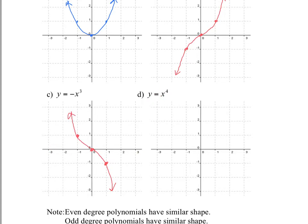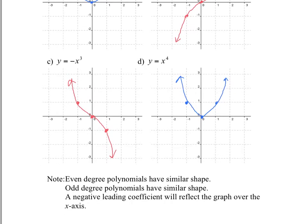x to the fourth actually looks very similar to x squared — it might be a little bit flatter. Instead of going straight up, it's a little flatter and goes up quickly. At zero you have zero, at one you have one, at negative one you have one — because it always stays positive due to the even exponent. I'll probably bring up graphs in class to show the slight difference, but they're very similar.